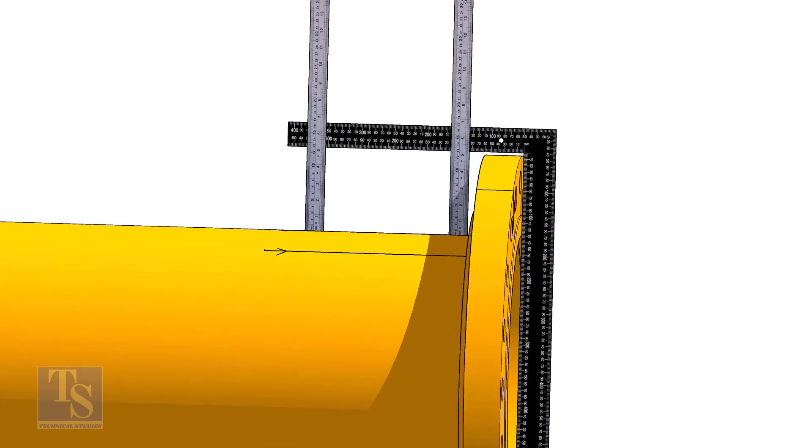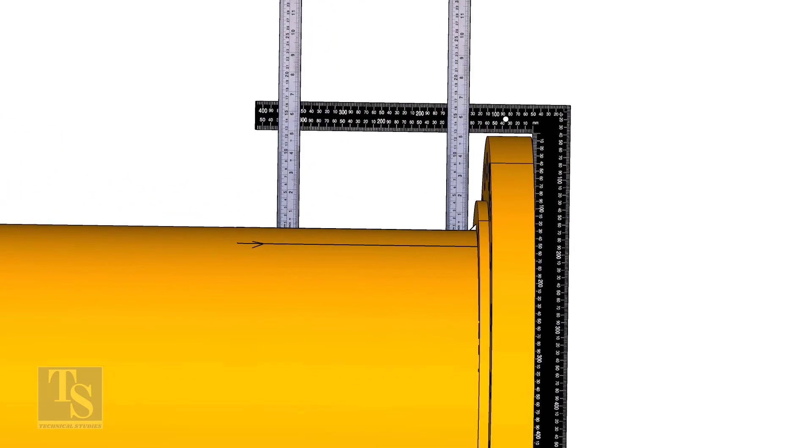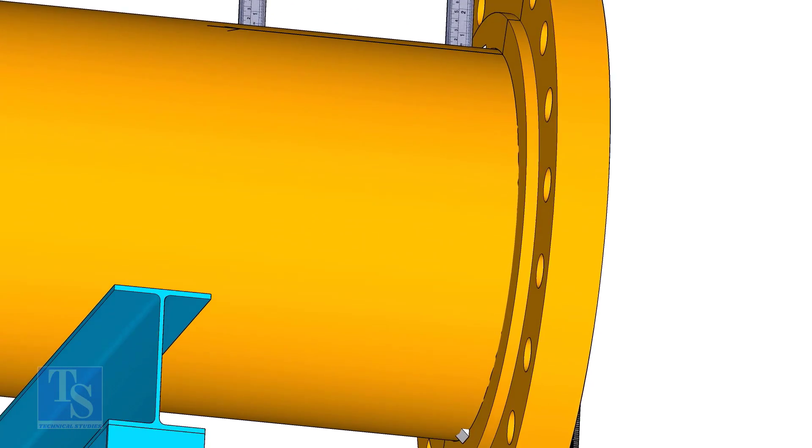Tack weld on the top of the pipe with the flange and check the squareness. If correct, tack weld at the bottom side also.